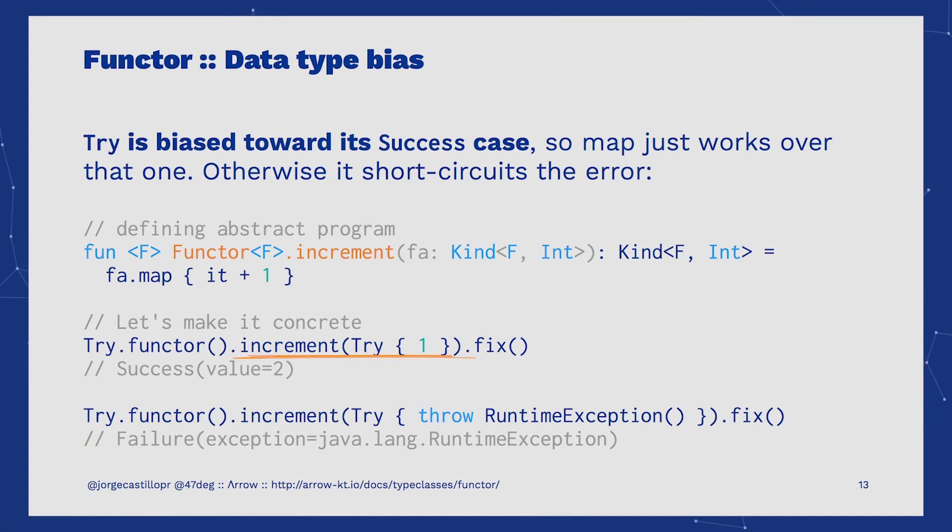Right after making our program concrete and fixing it to Try, we call increment over it. This time we are going to use an explicit Functor instance for Try, just as an example. Since the program is valid, it will succeed and will get the value correctly mapped and wrapped into the same context. On the other hand, when the operation turns out to be a failure, any computations over it will keep returning failure.